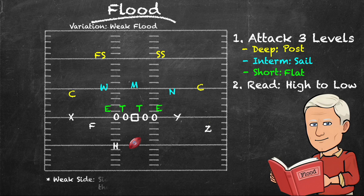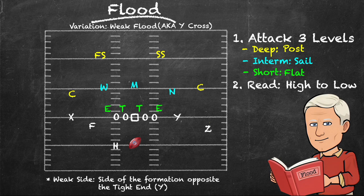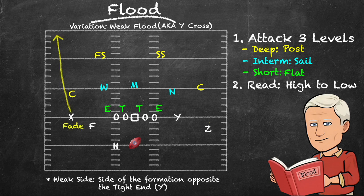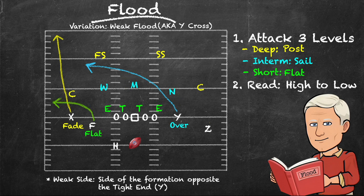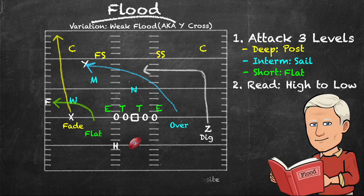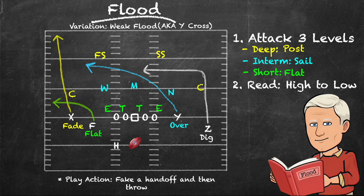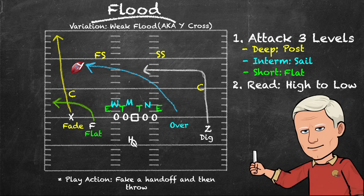One variation is weak flood, called Y-cross in some offensive systems. The idea is the same, except we are attacking the opposite side of the field. We have our deep route — this through or over route needs to get underneath the Sam linebacker and over the Mike linebacker — and our shallow route. The flat route draws away the flat defender, and the over route can serve a dual purpose by helping the backside dig come open as well. The use of play action can help draw the second level defenders in for a moment and open up that through route. Flood is a terrific concept with a lot of answers built in for the quarterback.